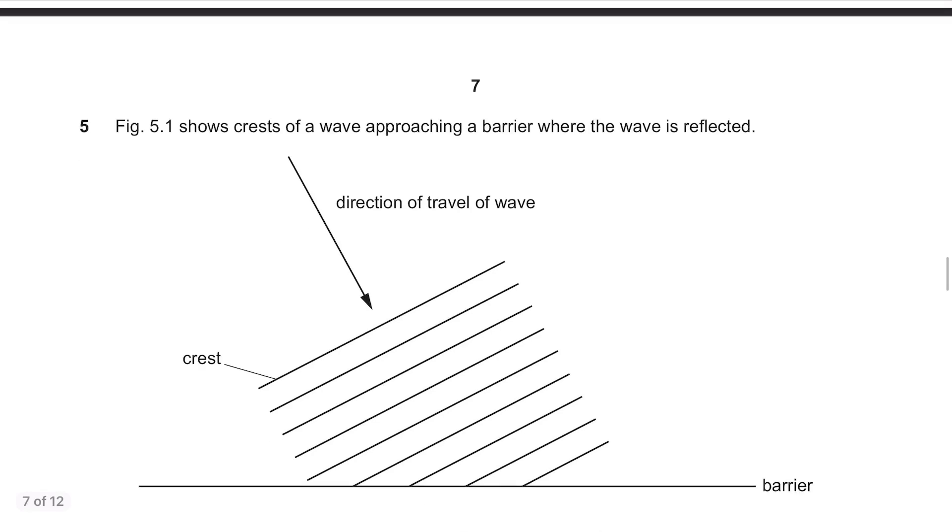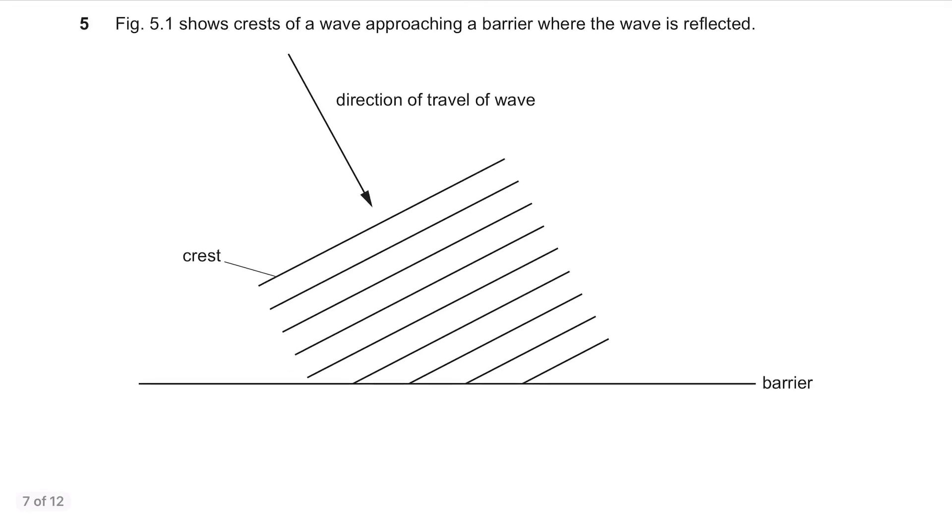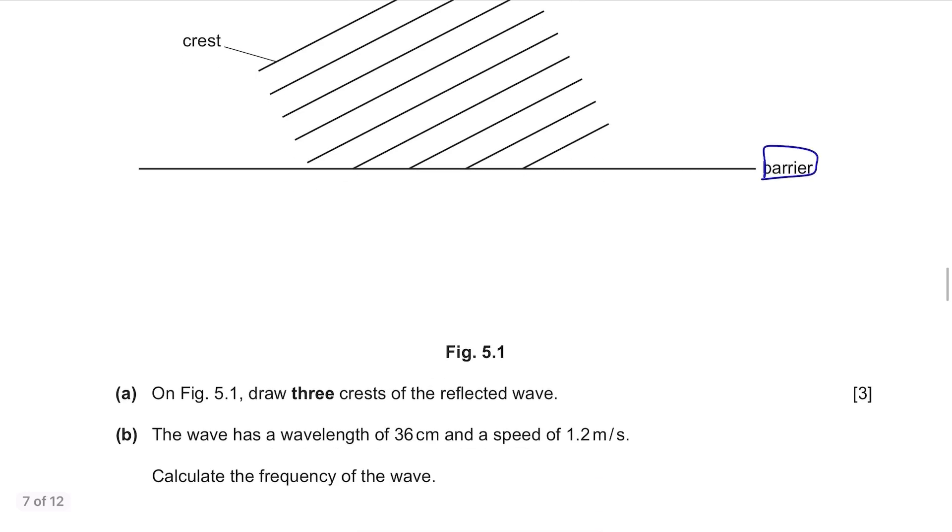Question 5. Figure 5.1 shows crests of a wave approaching a barrier where the wave is reflected. Wave is travelling from this direction and there is a barrier here.